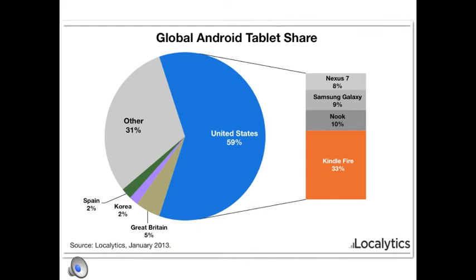The company Localytics put together a global Android tablet market share diagram. You can see that most of the tablets are in the U.S., but that of course is changing. More significantly, the majority of those tablets being sold are Kindle Fire tablets. So it's certainly worth thinking: if I'm going to develop for an Android tablet, which one would I want to develop for?